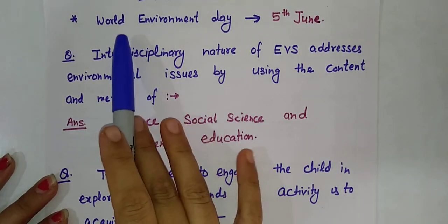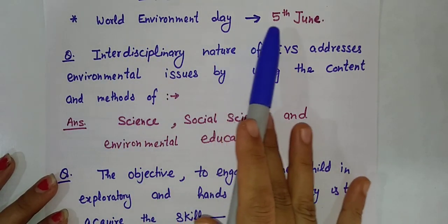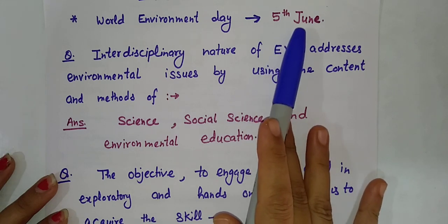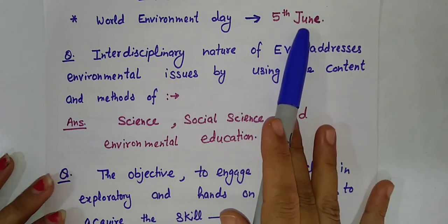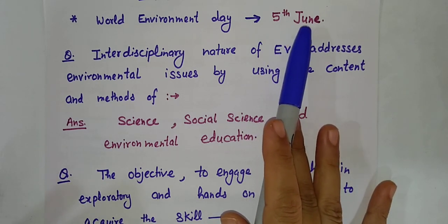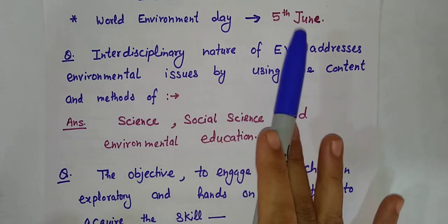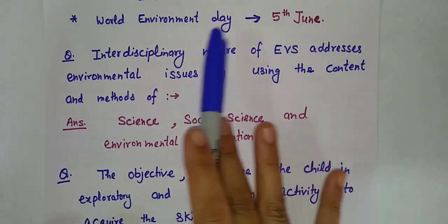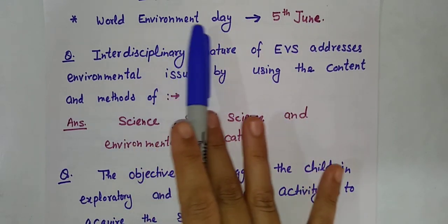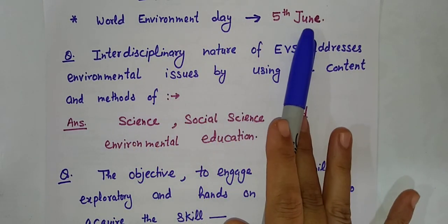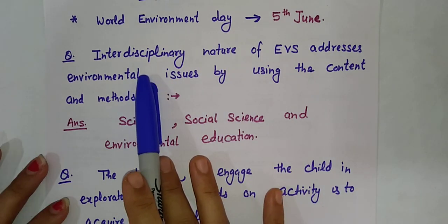Now let's take a few questions. First of all, you all should know that World Environment Day is celebrated on 5th June. That is very important. Most of you may know this, but those who don't — keep in mind that World Environment Day is celebrated on 5th June.